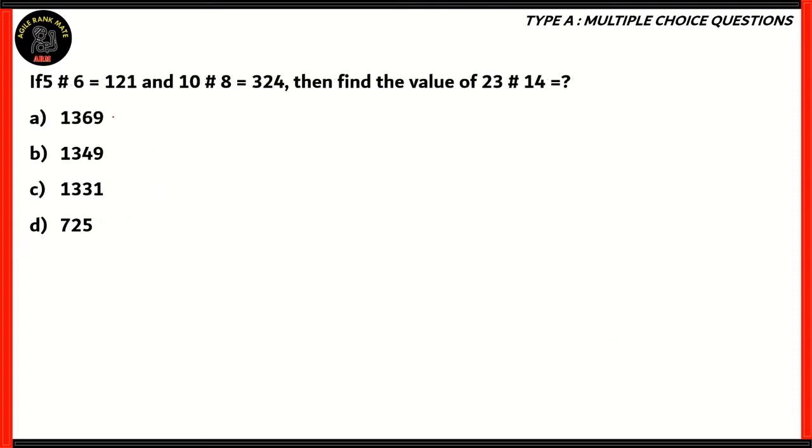Let's look at another question. If 5 hashtag 6 equals 121, 10 hashtag 8 equals 324, then find the value of 23 hashtag 14. The two numbers on the left are related to the right-hand side in some particular way, and that relation is represented by the symbol. We need to figure out what that relation is. If you look at the RHS, it's 121, which is a perfect square. 121 is the square of 11, and if you notice, the sum of 5 and 6 is 11.